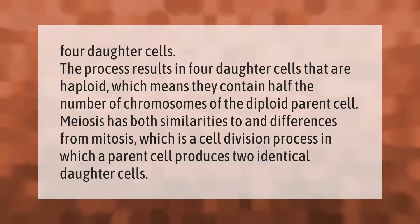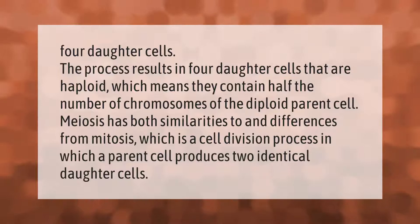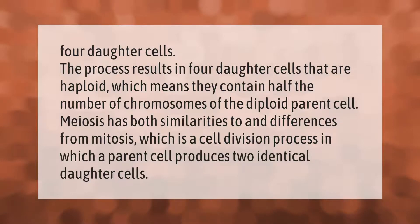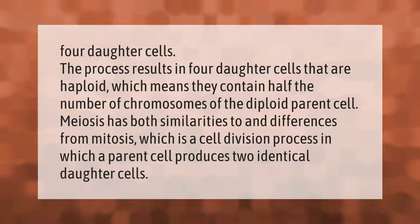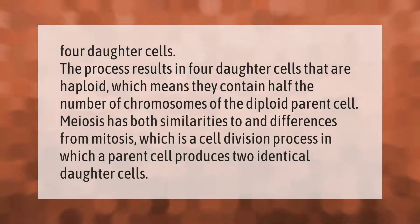The process results in four daughter cells that are haploid, which means they contain half the number of chromosomes of the diploid parent cell. Meiosis has both similarities to and differences from mitosis, which is a cell division process.